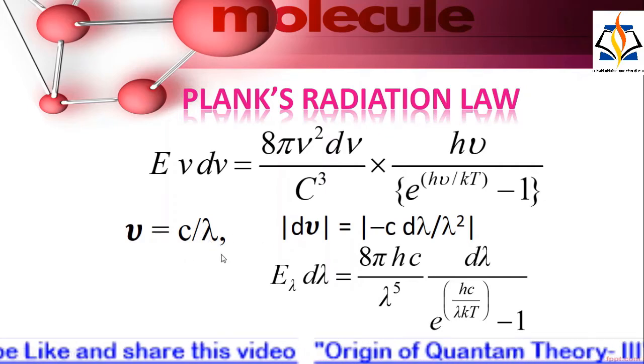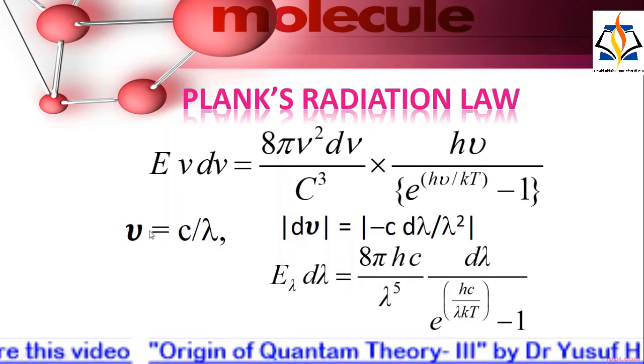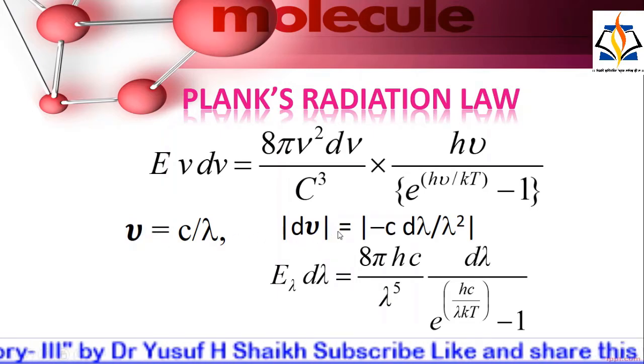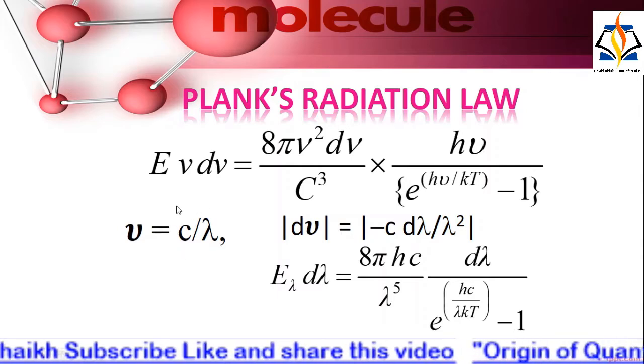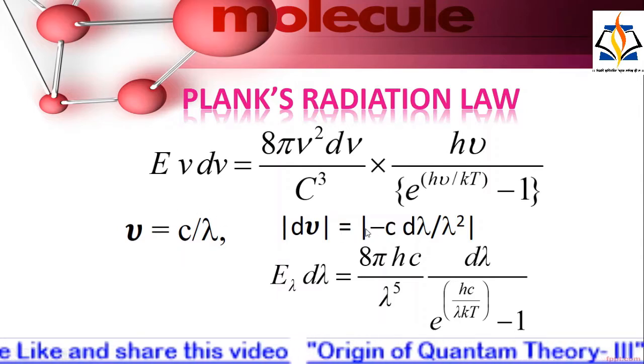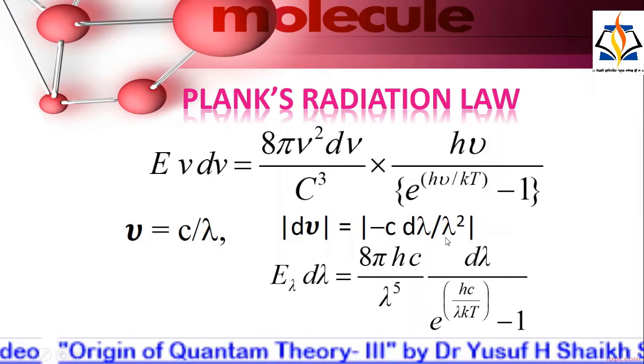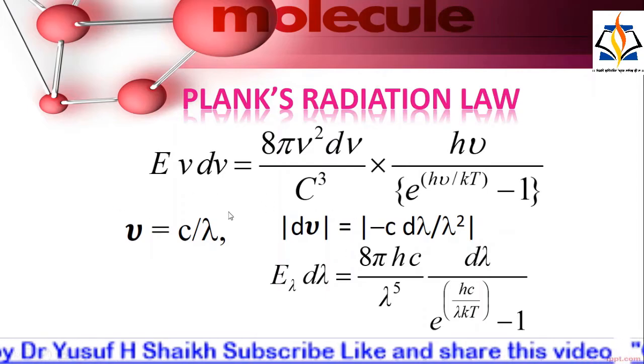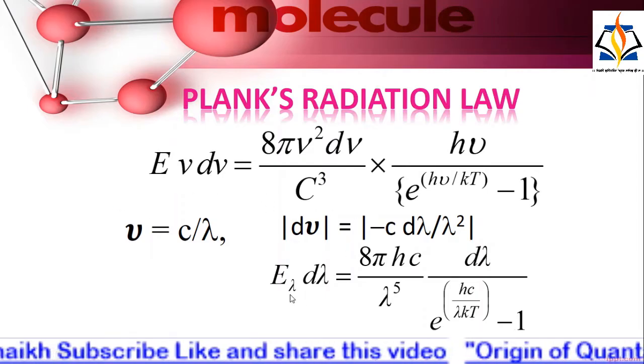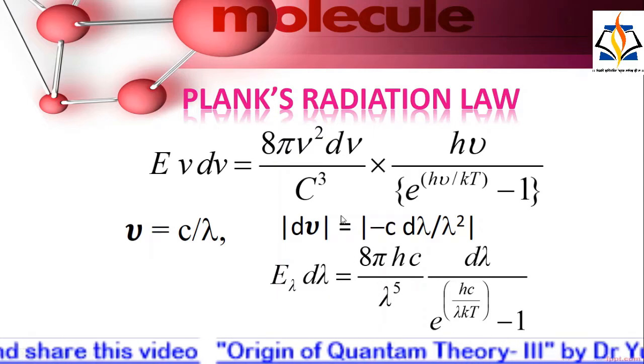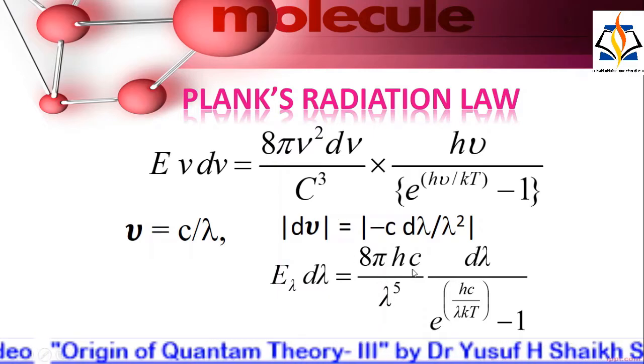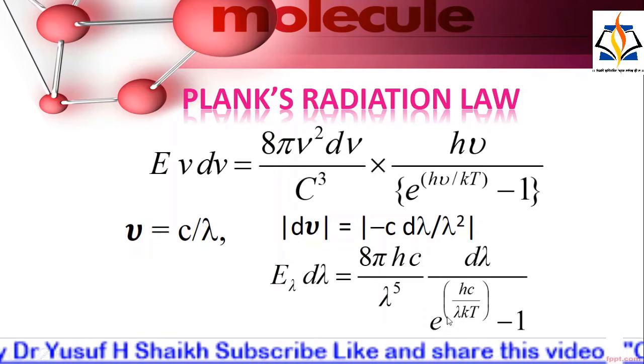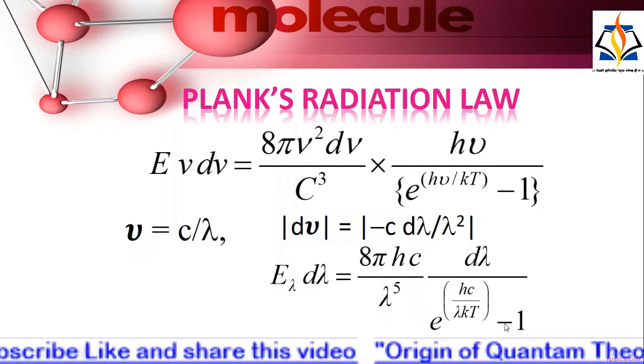Now if we take the derivative, modulus of d nu equals modulus of minus c d lambda upon lambda squared. If we substitute these values, then we get E lambda d lambda equals 8 pi hc upon lambda raised to 5 multiplied by d lambda upon e raised to hc upon lambda kT minus 1.